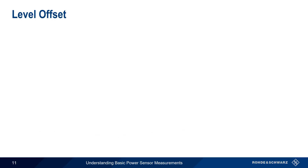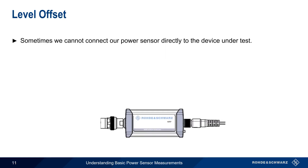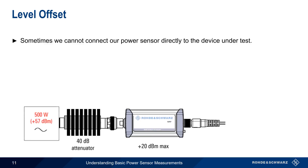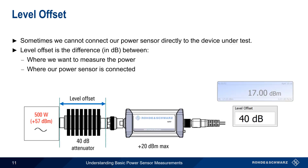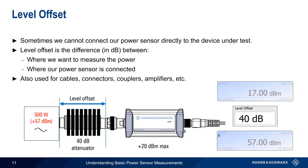In some cases, we can't connect our power sensor directly to the device under test. For example, all power sensors have a maximum input power which should never be exceeded in order to avoid permanent damage to the sensor. When we need to measure power levels above this limit, we use an attenuator to bring the power level down to an acceptable level. If, however, we want our measurement results to be expressed in terms of the pre-attenuator power, we can add a level offset. A level offset is basically the difference, in dB, between where we want to measure power and where the power sensor is attached. For example, if we use a 40 dB attenuator to measure a 500 watt or 57 dBm source, we get 17 dBm; adding a level offset of 40 dB would make our measurement result read 57 dBm. Level offset can also be used to compensate for losses in cables, connectors, and directional couplers between the device under test and the power sensor.